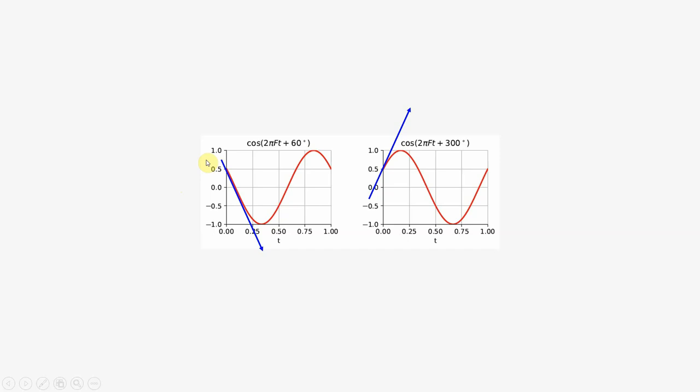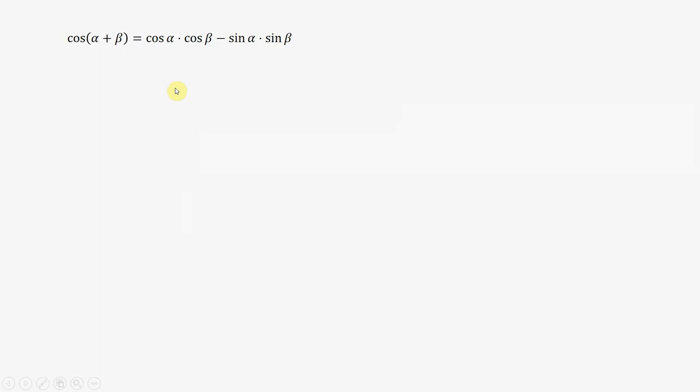Something really interesting happens when we apply the identity cos(α + β) = cos α cos β - sin α sin β to our phase shifted sinusoid. I have included an amplitude A here: A cos(2πft + φ) = A cos 2πft cos φ - A sin 2πft sin φ.